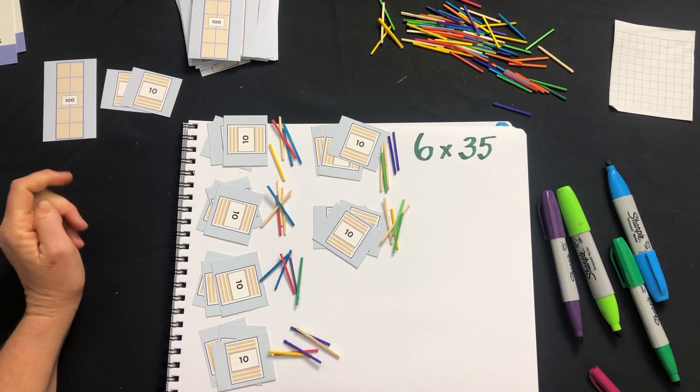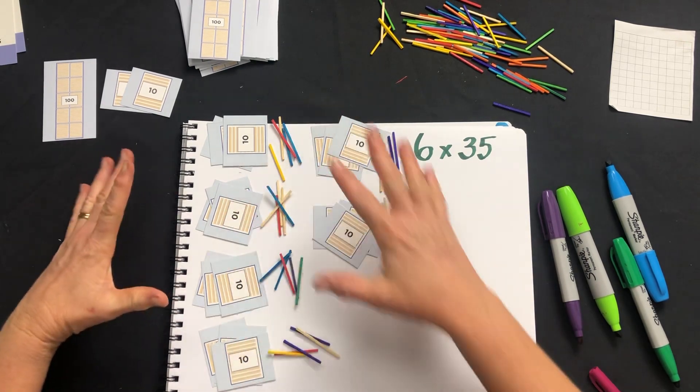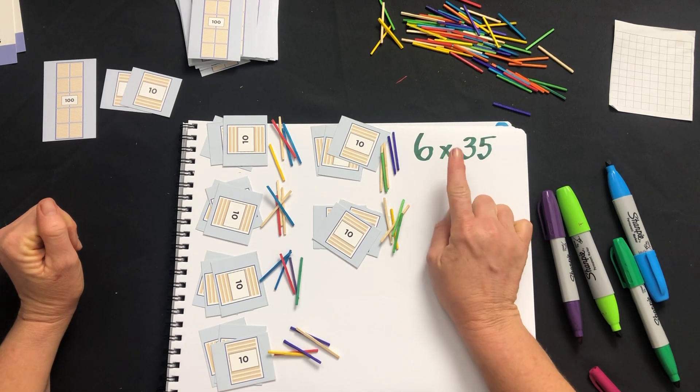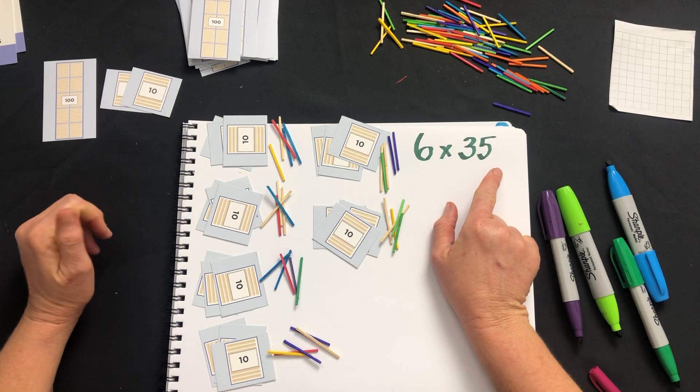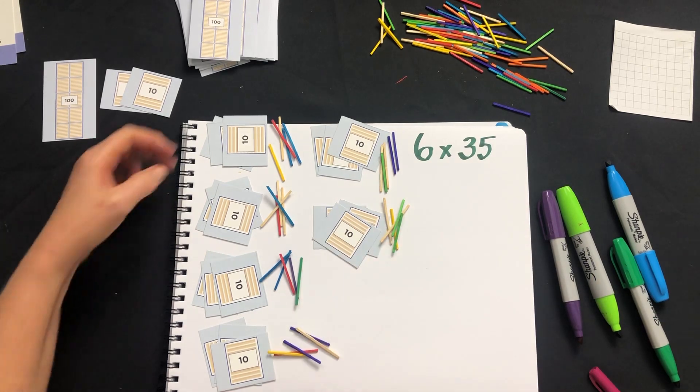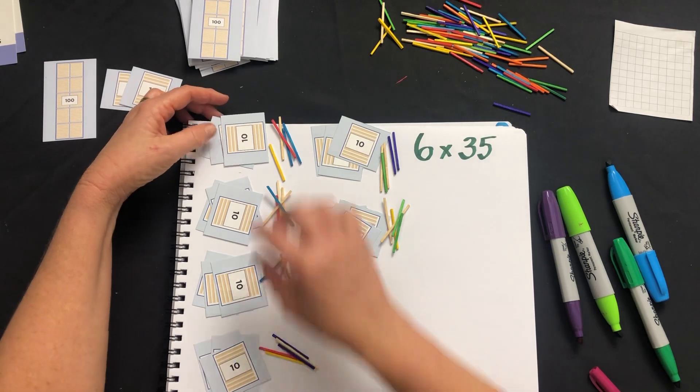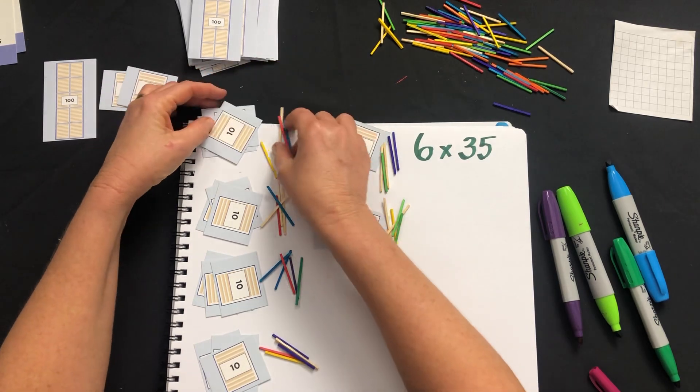Okay, let's have a look at a multiplication and representing it using physical materials. So we have six multiplied by 35, which we've represented here as being six groups of 35 - three tens and five ones.